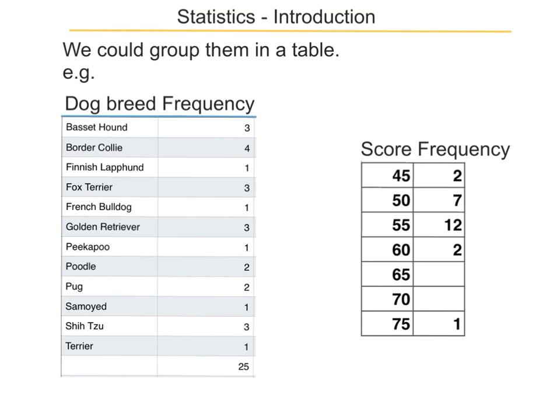We often put our data into tables so we can make sense of it. Here is a frequency table. On the left, the first one has dog breed, and on the right, how frequently people picked that dog breed. Border Collie was the most popular out of all these dog breeds because four people picked it.